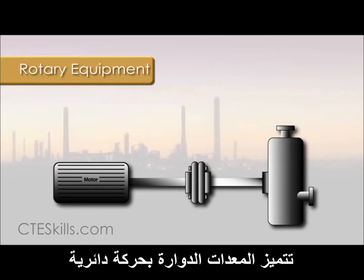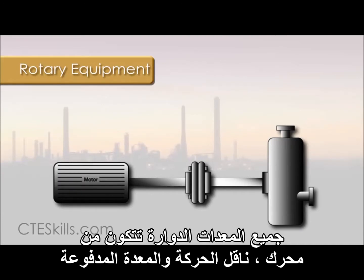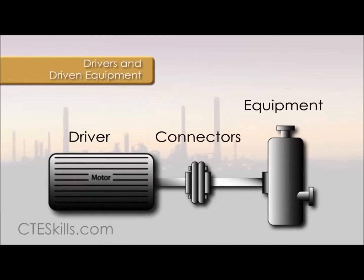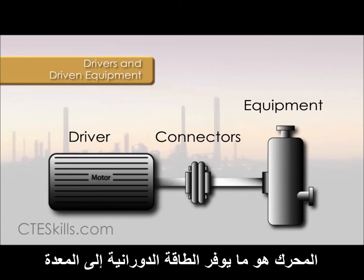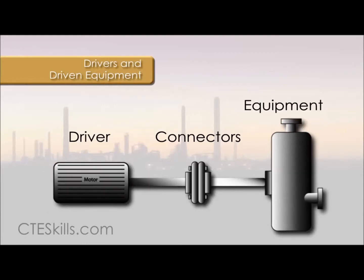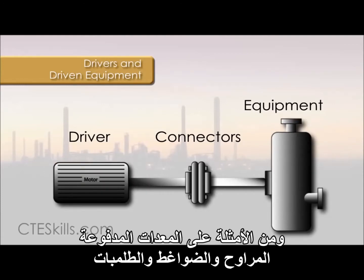Rotary equipment is distinguished by circular movement. All rotary equipment is made up of a driver, connector, and the driven equipment. The driver is what provides the rotational energy to the driven equipment. An example would be an electric motor. Examples of driven equipment would be fans, compressors, or pumps.